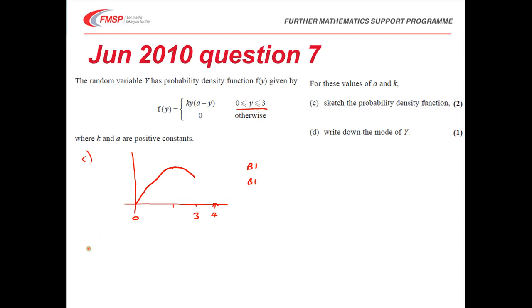And then for part d, we're asked to write down the mode. The mode is the highest point on the graph. You could do this using calculus if you wanted, but as you've got a sketch, we can clearly see that the mode in this particular case is when y equals 2. So we get another B mark for that aspect. Sketches are useful. If you can sketch a PDF, it tells you an awful lot about what the function is going to be.